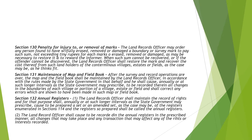Section 132 — Annual registration: the land record officer shall maintain the record of rights and for that purpose shall annually, or at such longer intervals as the state government may prescribe, cause to be prepared a set or an amendment set, as the case may be, of any of the registers enumerated in section 114, and the registers so prepared shall be called the annual registers. The land record officer shall cause to be recorded in the annual registers in the prescribed manner all changes that take place and any transactions that may affect any of the rights or interests.